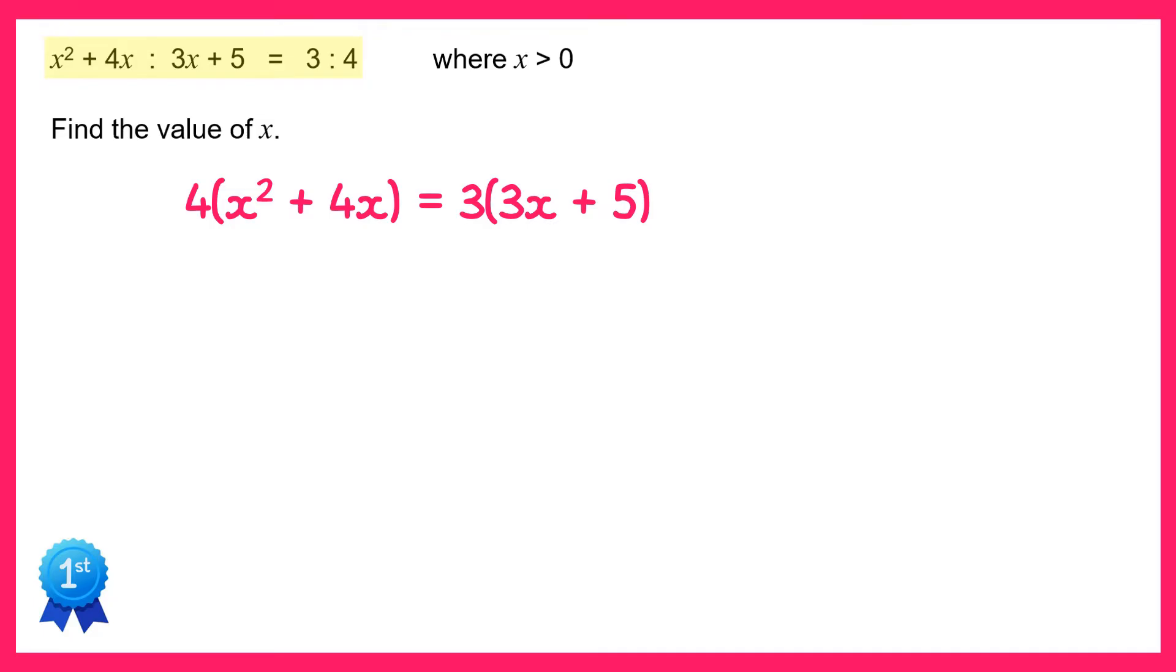Now on the right hand side I have three lots of 3x plus 5, and 3x plus 5 is represented by four parts in the ratio. So I have three lots of 4 parts which is again 12 parts.